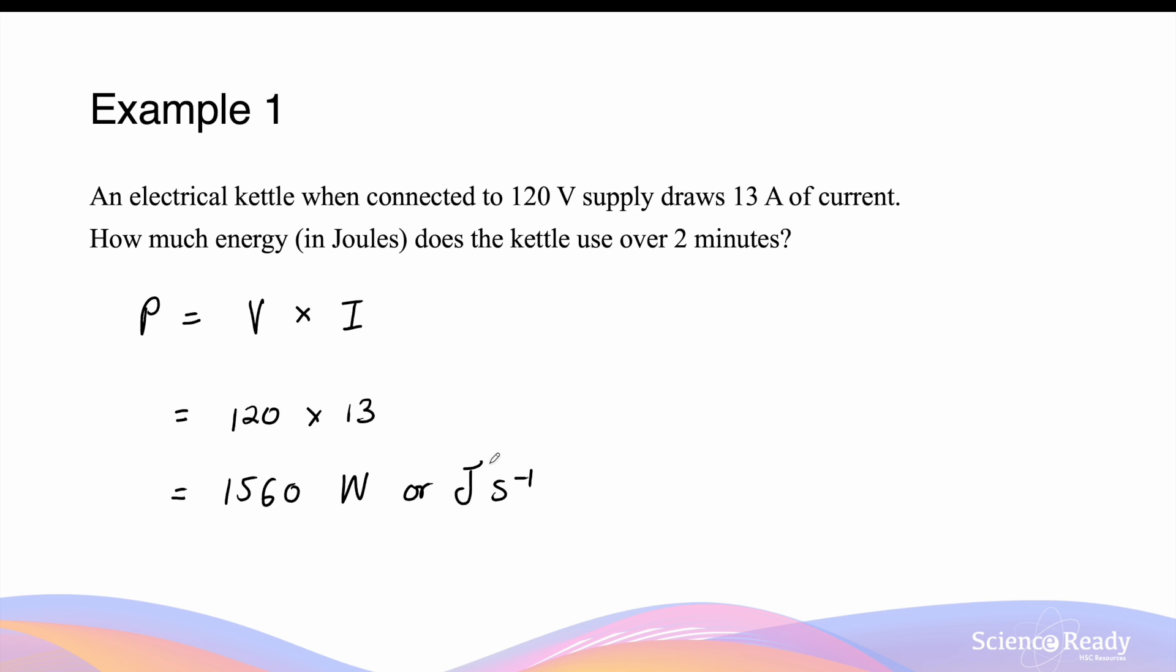So every second, this kettle will draw 1560 joules of energy. In two minutes, which is 120 seconds, the energy will be equal to the power times the time. So 1560 multiplied by 120 seconds. This gives an answer of 1.872 times 10 to the power of 5 joules of energy used over two minutes.